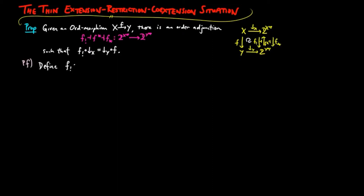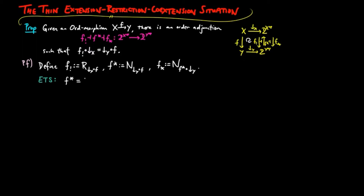For the proof, define the f-extension as the realization induced by the functor lower segment on y composed with f. Define the f-restriction as the nerve induced by the same functor, and the f-coextension as the nerve of the f-restriction precomposed by the lower segment on y. Thus, by the result concerning the existence of thin nerve-realization adjunctions, it is enough to show that the f-restriction is also the realization induced by the functor f-restriction precomposed by the lower segment on y.